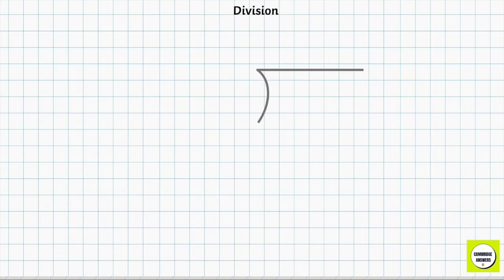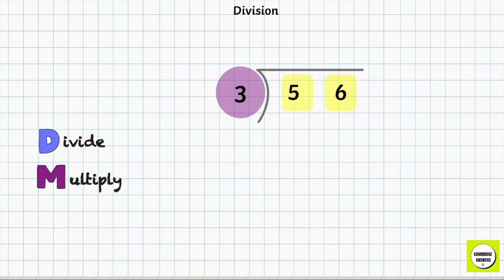Let's use our division symbol to divide 56 by 3. Division has 4 steps: divide, multiply, subtract, bring down and then repeating the procedure.